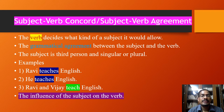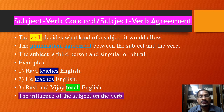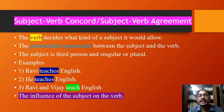Look at the examples. The first is 'Ravi teaches English,' the second is 'He teaches English,' and the third is 'Ravi and Vijay teach English.' In the first sentence, Ravi is the subject — it is third person singular, and therefore the suffix -es is added to the main verb 'teach,' giving us 'teaches.' The same applies to example two: 'He teaches English.' Here, 'he' is also third person singular, so suffix -es is added. So it is 'He teaches English.'